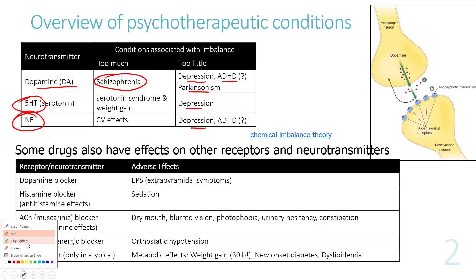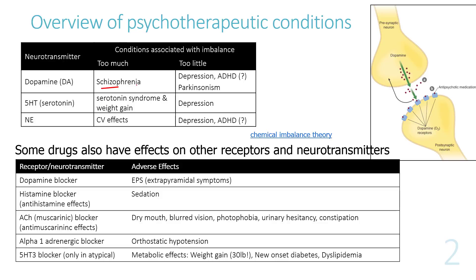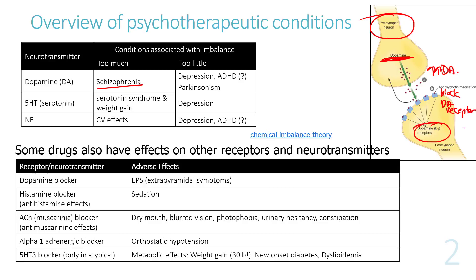Since schizophrenia involves too much dopamine, drugs to manage it block dopamine receptors. Neurons in the CNS release too much dopamine, and when dopamine receptors are blocked, it is as if dopamine levels are actually decreased.